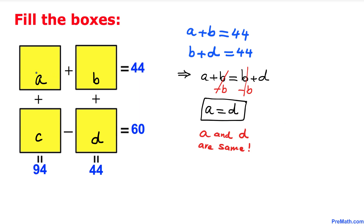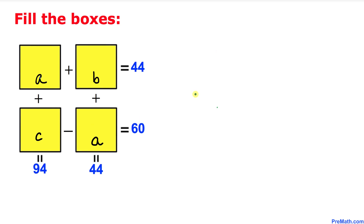Since A and D have the same value, I can replace D with A, so that box becomes A as well. This is going to make our job a lot easier. Now let's focus on the vertical boxes: A plus C equals 94.